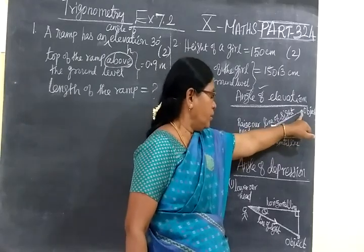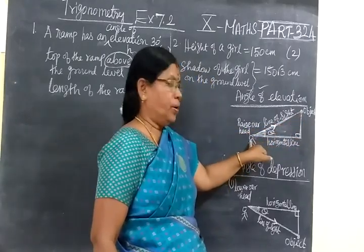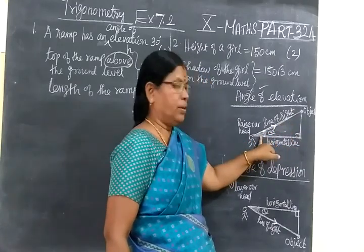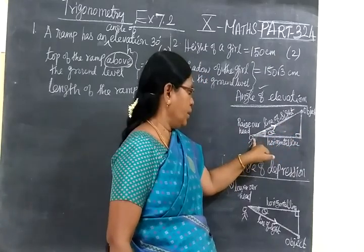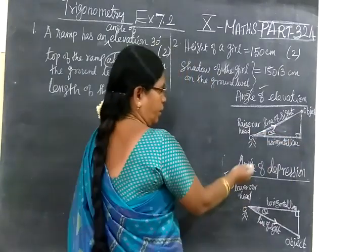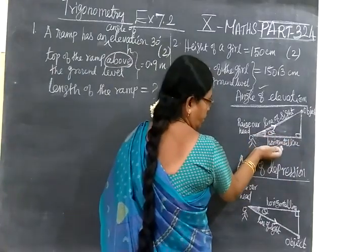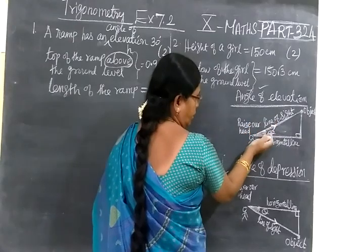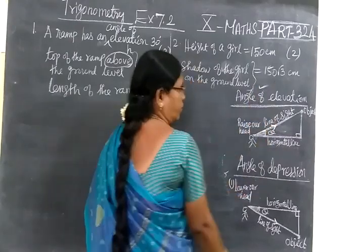Now join this object and eye level. This line is known as line of sight. Line of sight is joining eye level and object. Now the angle formed between horizontal line and the line of sight is known as angle of elevation.